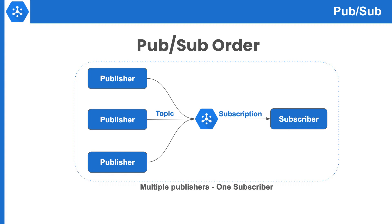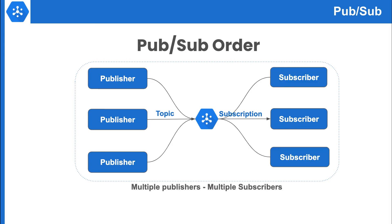So let's increase the number of subscribers. Now we have multiple publishers and multiple subscribers. It would become a challenge to maintain the order because the consumer is not a single subscriber. Also, each subscriber can take its own time to process individual messages because of network conditions and processing power.